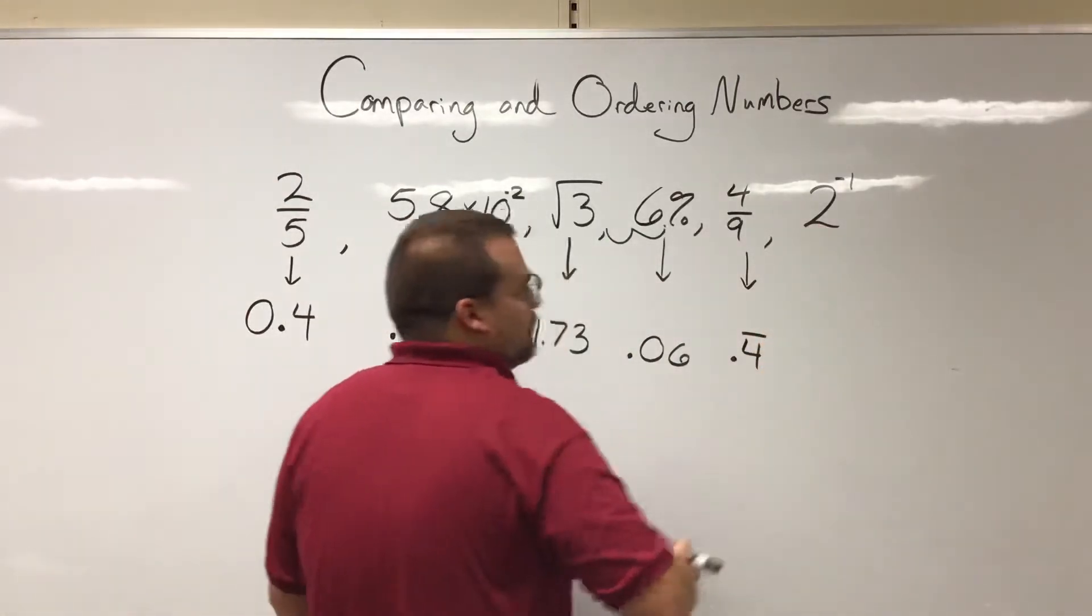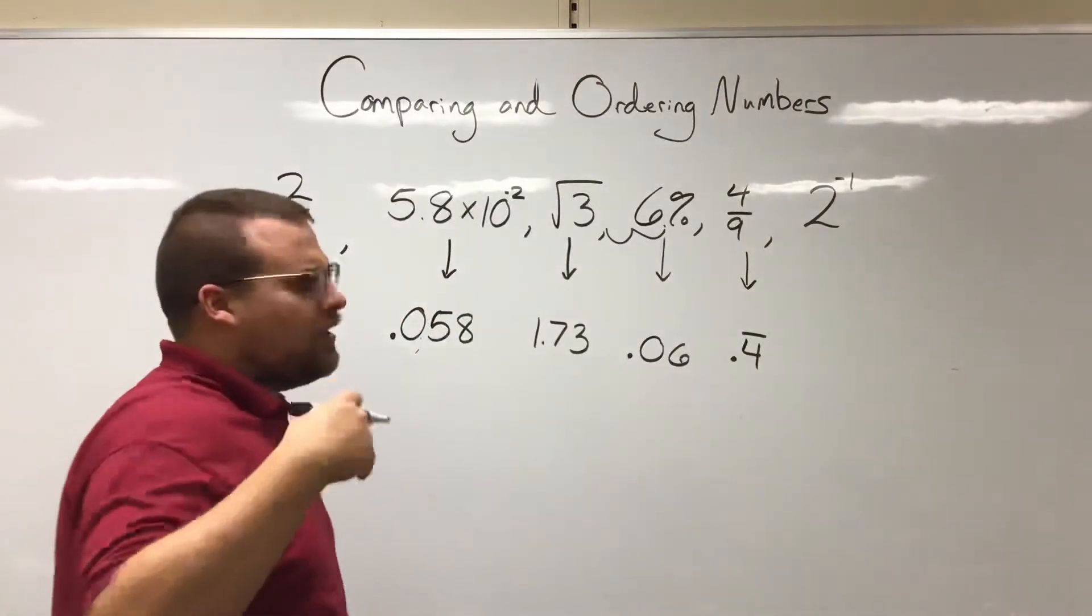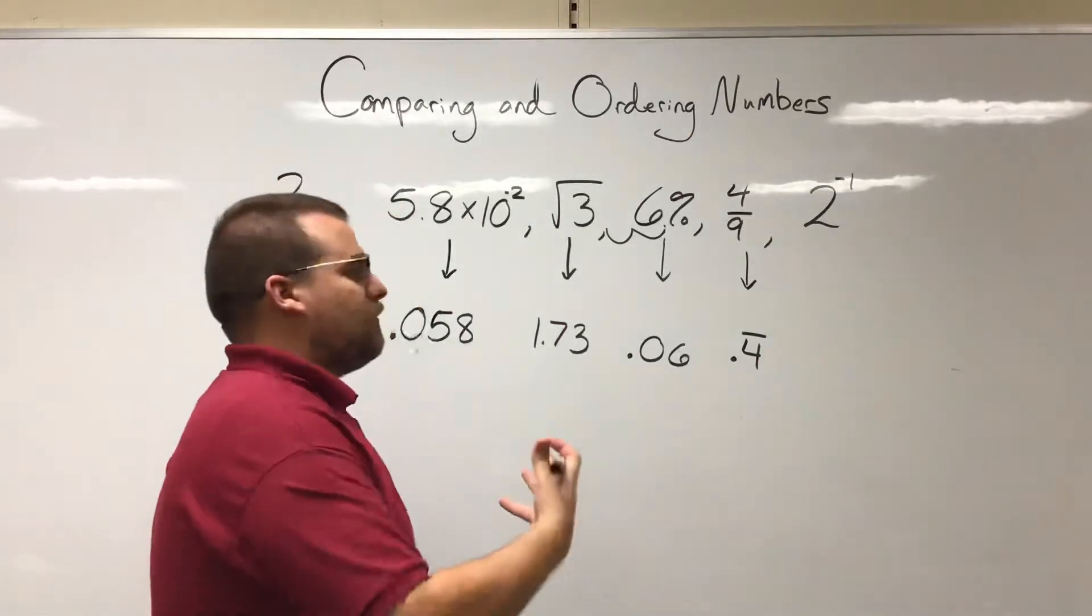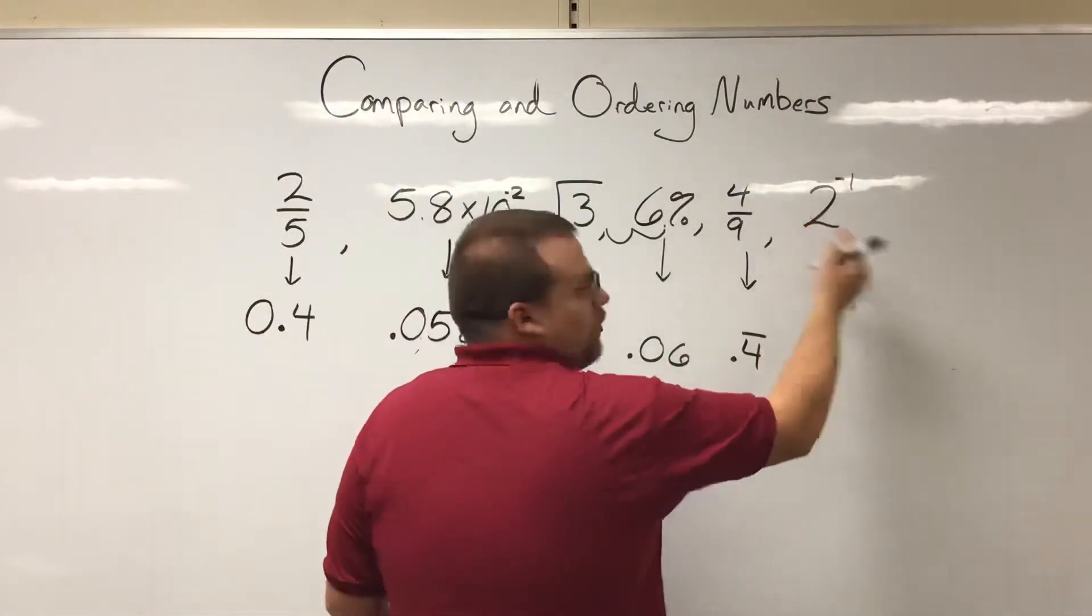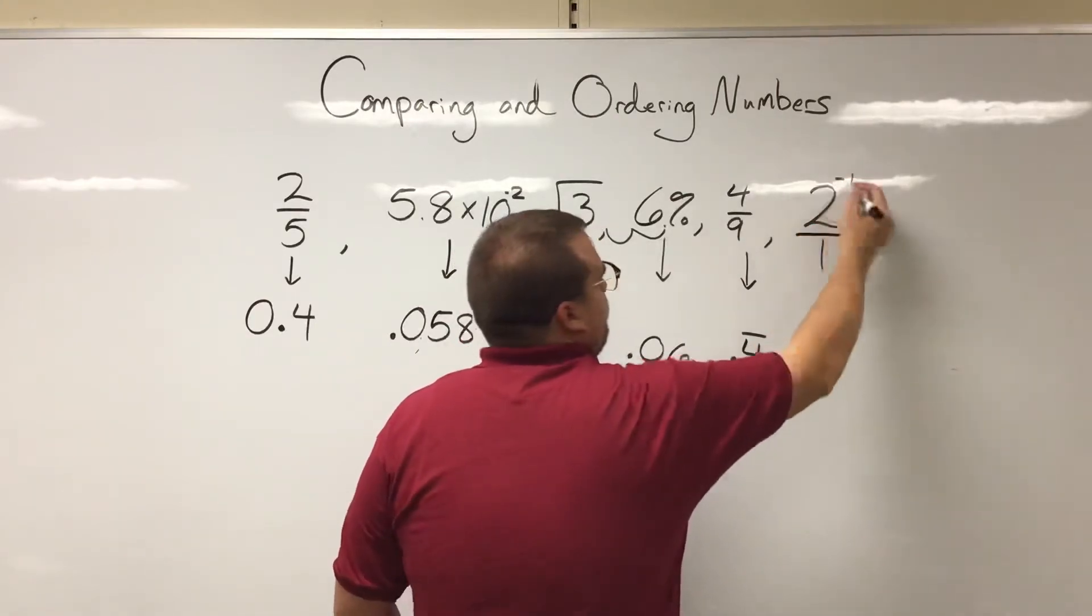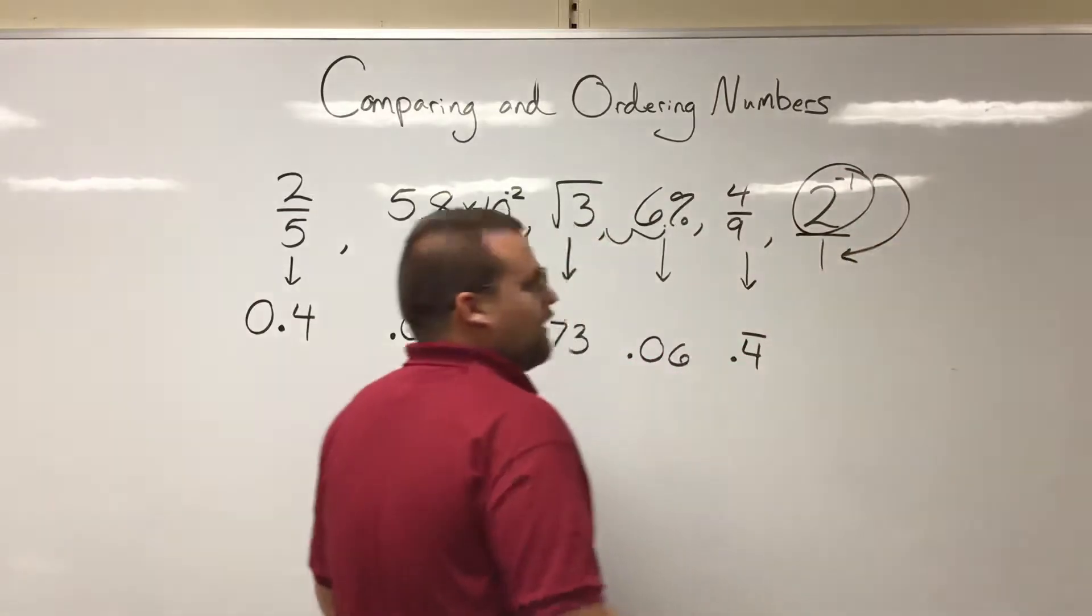And then two to the negative first. This actually might be the hardest one. I mean you could put in a calculator, but let's think about it a little bit mathematically. A negative exponent tells us that this is in the wrong side of the fraction, right? So this would be two over one. The negative exponent would tell us, hey, take this whole thing and flip it down there.